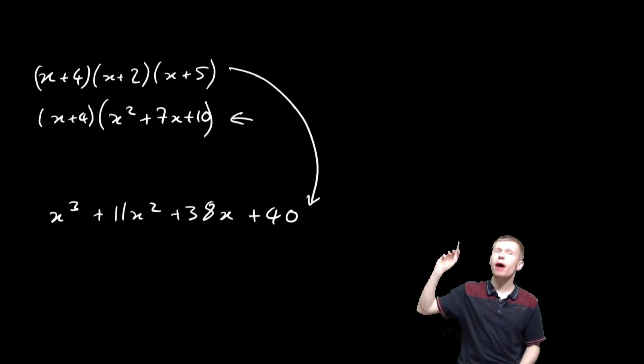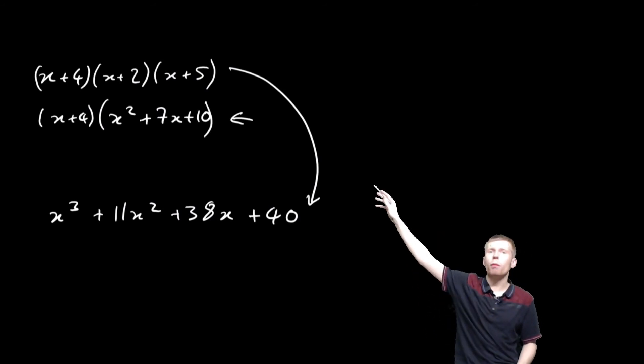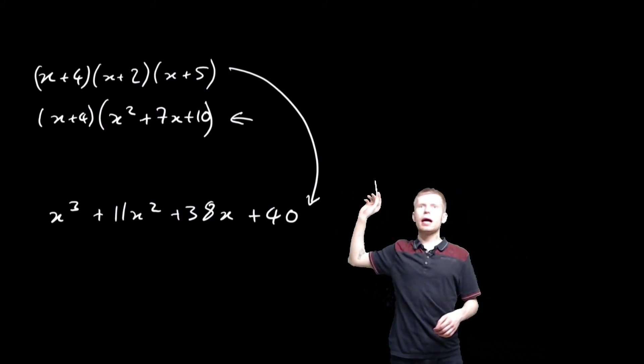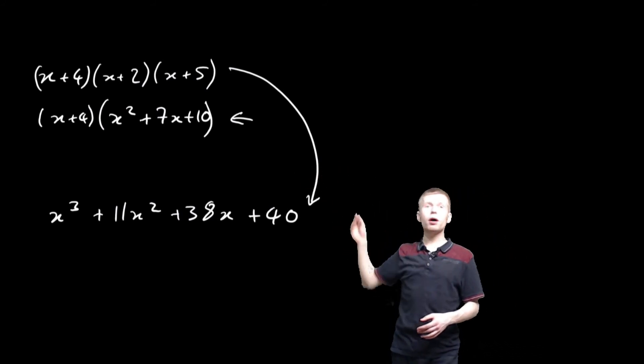Because if I know what one of the factors of this cubic is, then I can put it in this form. I know it's going to look like something with a linear factor multiplied by a quadratic.